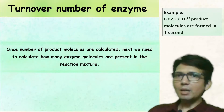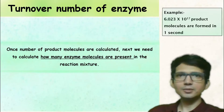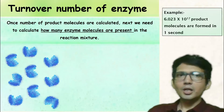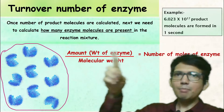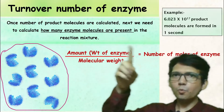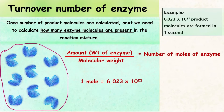Once the number of product molecules is calculated, next we need to calculate how many enzyme molecules are present in the reaction mixture. To do this, we divide the weight of enzyme by its molecular weight, which gives us the number of moles of enzyme. Since one mole equals 6.023×10²³ molecules, this can be converted into the total number of molecules.